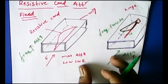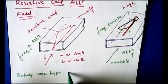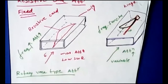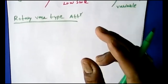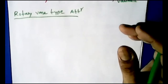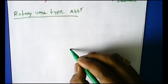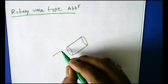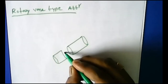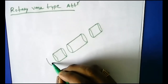Now we approach the second method: the rotary vane type attenuator. This is the second classification. Here we have a circular waveguide, and one more circular waveguide, and another circular waveguide — so three circular waveguides are present in the structure.